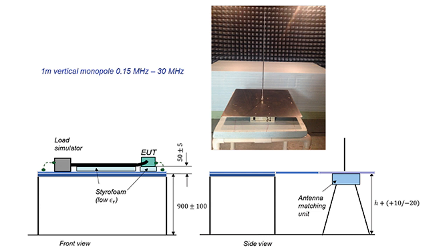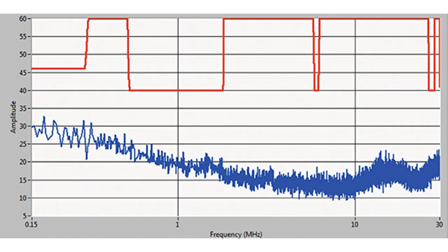The measurement setup inside the ALSE for the radiated emissions measurements using a monopole antenna is shown in figures. The monopole antenna measurement results are shown in figure.